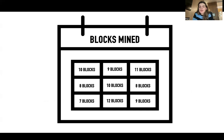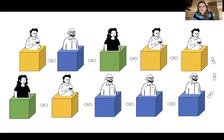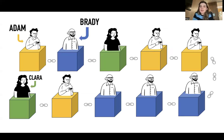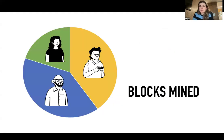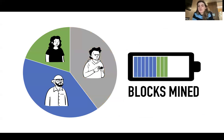So, let's do just that. Let's look at this example of 10 blocks being mined in one day. In this day, Adam and Brady each mined four of the 10 blocks, and Clara mined two. Since Brady and Clara, for example, have mined 60% of the blocks, we might assume they hold 60% of the power. And therefore, the Nakamoto coefficient is two.